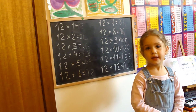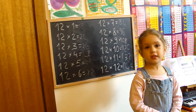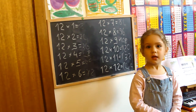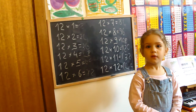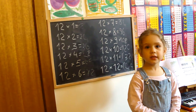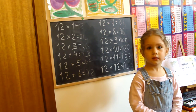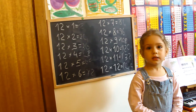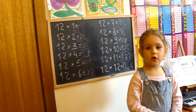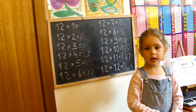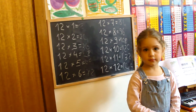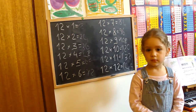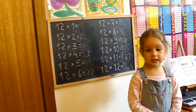Twelve times three, thirty-six. Twelve times four, forty-eight. Twelve times five, sixty.